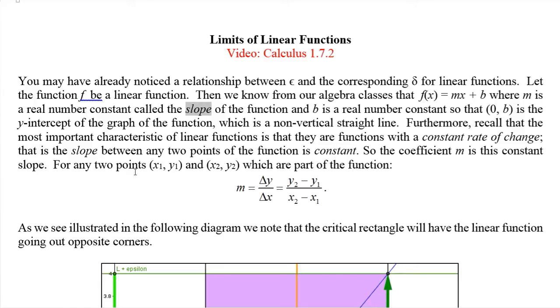Now, in general remember that the slope for any two points which are part of the function is delta y over delta x which is y2 minus y1 over x2 minus x1, and that's going to equal that m which is a constant.